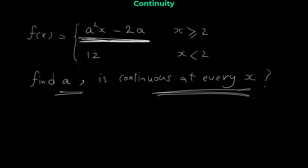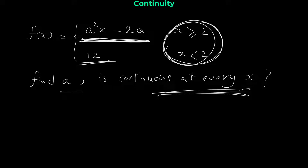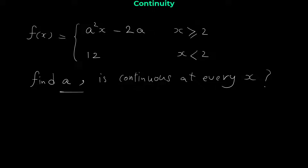The first equation the function is defined by is a simple line, and it is continuous everywhere. The other equation is also continuous everywhere. The only possible point where this function may be discontinuous is where the function rule changes — at x = 2, where one equation applies for x ≥ 2 and another for x < 2.